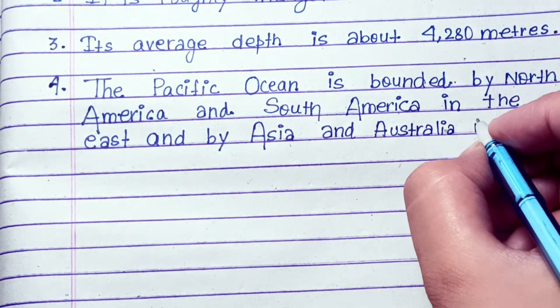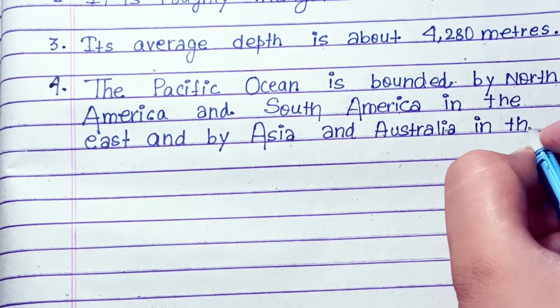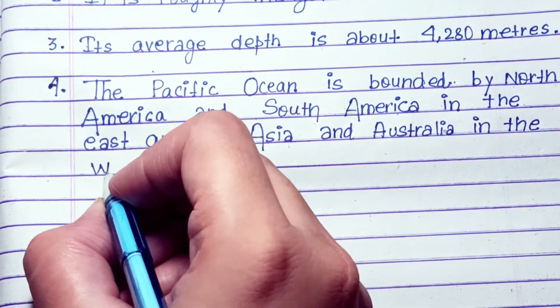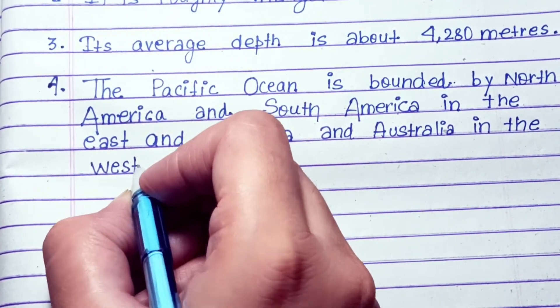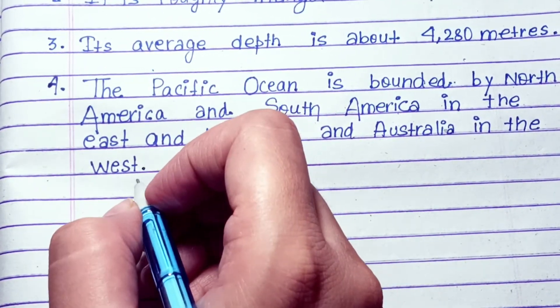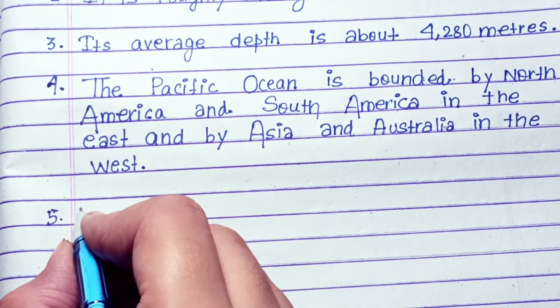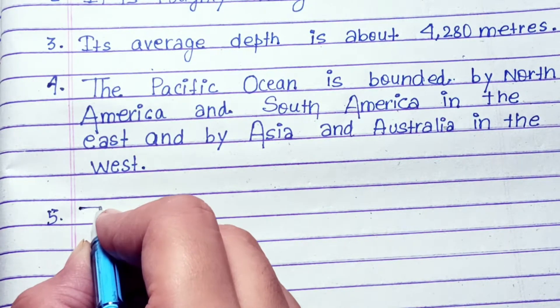The Pacific Ocean is bounded by North America and South America in the east, and by Asia and Australia in the west.